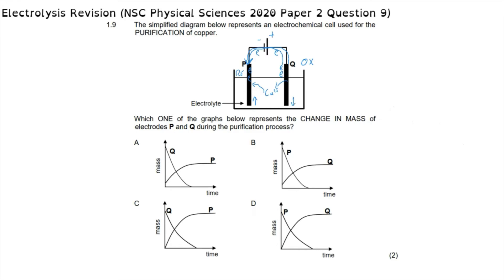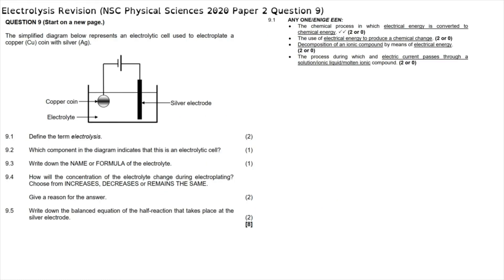From this we can see that the mass of electrode P is going to be increasing while the mass of electrode Q is going to be decreasing. Both options A and C show this setup. The difference is that in option A, electrode P starts with a non-zero mass, whereas in option C the mass starts at zero. It's not possible for reduction to take place unless there is already something present to host those electrons, so the mass of electrode P cannot start at zero. The correct answer to question 1.9 is option A.